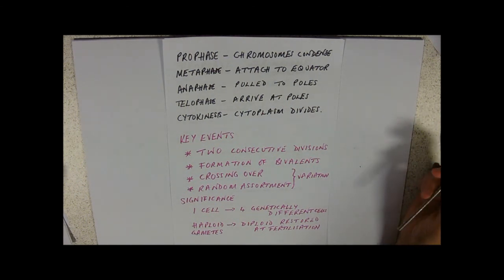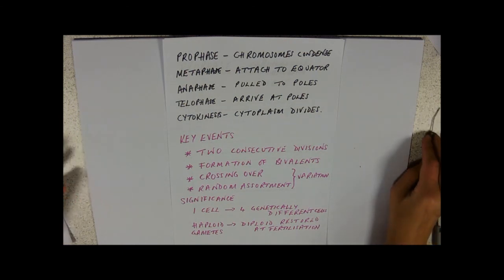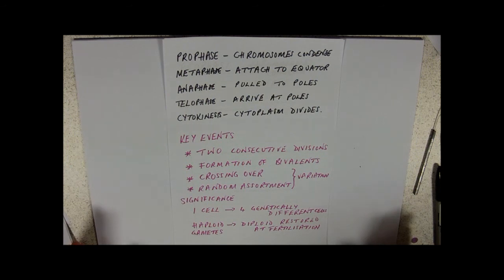The other thing is that they're haploid. So, these four genetically different cells are all haploid. So, that means that the chromosomes are not in pairs. So, in a diploid cell, your body cells, for example, your chromosomes are in pairs. Your gametes are haploid. That means that they have to get together with another gamete to make a diploid number.